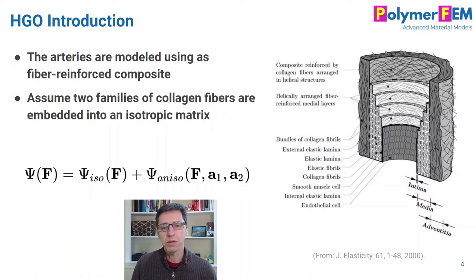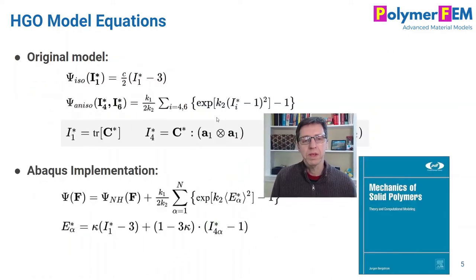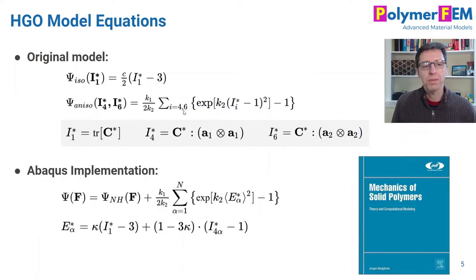In the original work, Holzapfel, Gasser, Ogden and all of them used two fiber families of collagen fibers that they wanted to study. And specifically these are the equations that they used. It may look a little messy here but let me talk about the details. The isotropic hyperelastic behavior, here's the energy function on the left hand side. This as you can see is a Neohookean hyperelastic model which is incompressible. This was originally developed for incompressible arteries.